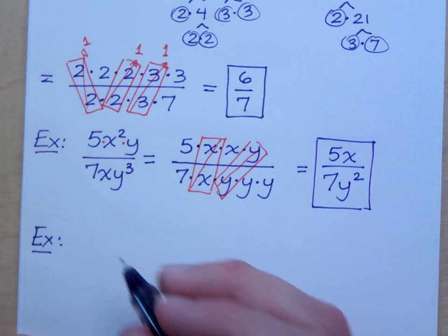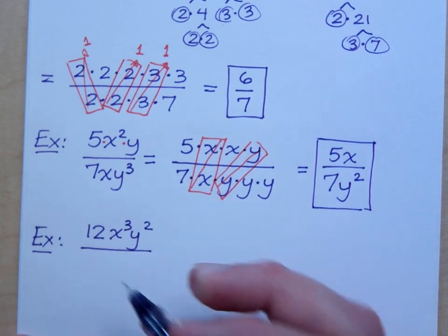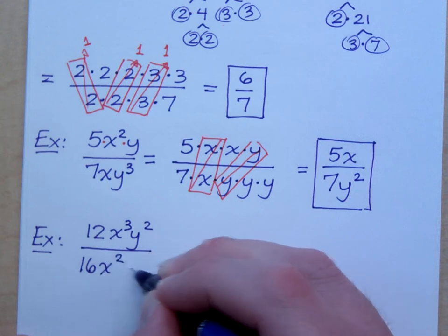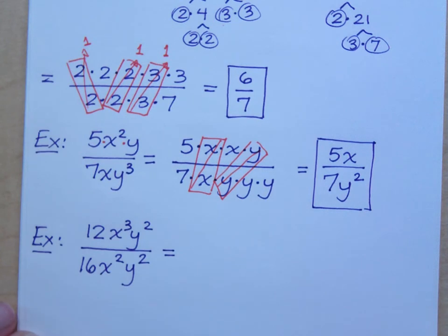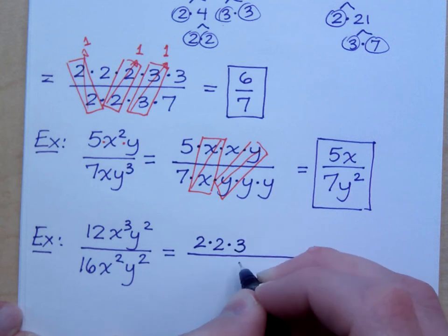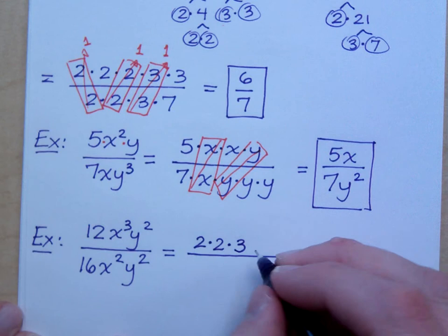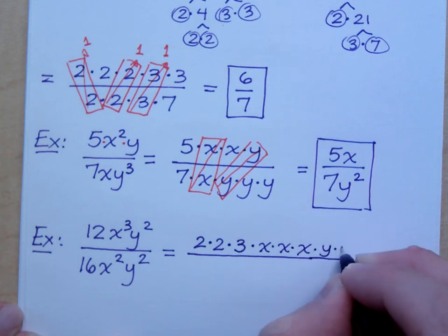Let's do another one of these just to make sure that you're with me. 12x to the third y squared over 16x squared y squared. How can I rewrite my 12? I want to write everything in terms of its factors. Broken down as small as possible. If you did a little factor tree on the side, you would see that 12 breaks down as 2 times 2 times 3. And then you have 3 factors of x and 2 factors of y. Do you all agree?